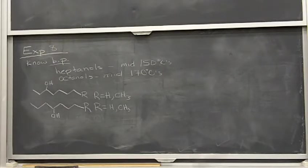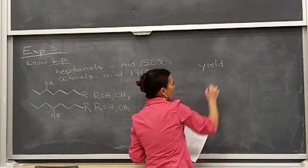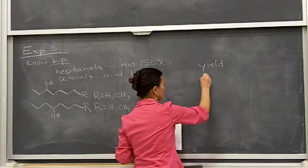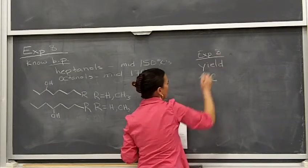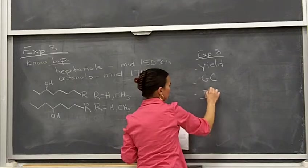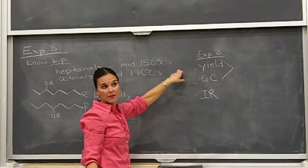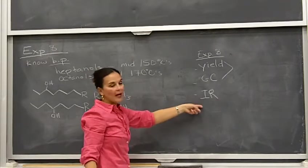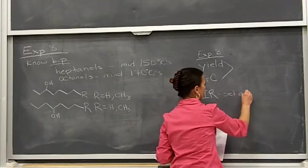After you do this distillation, you've got your material to go on to experiment 11. But you need three pieces of information: you need to collect the yield for your alcohol, you need to prepare a GC sample for your alcohol — this is for experiment 8 — and you need to collect an IR spectrum. The yield and GC sample need to happen right after you're done with the distillation, before you go on to experiment 11. The IR you don't have to do right after distillation.